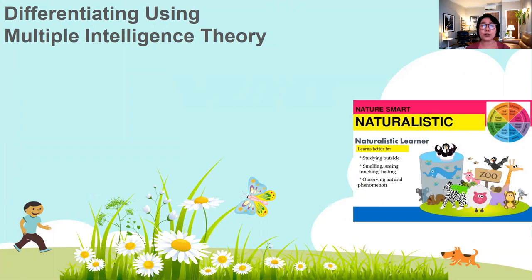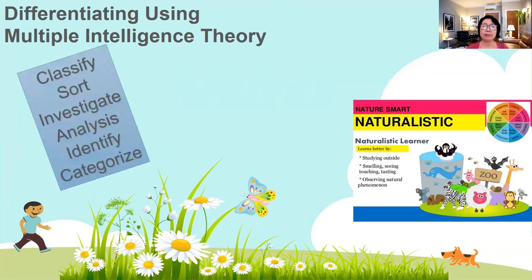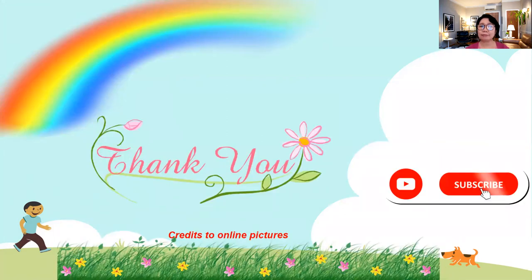Students inclined to naturalistic intelligence are like little scientists. You can give them activities where they investigate, classify, sort, analyze, identify, and categorize. You can bring them outside to collect things, classify them, and discuss findings. These are the nature-smart students. Those are the different approaches for differentiated instruction to create fun activities in the classroom.